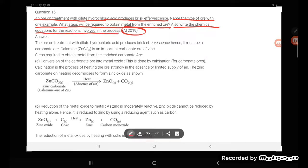The ore on treatment with dilute hydrochloric acid produces brisk effervescence, so it must be a carbonate ore. Calamine, which is zinc carbonate (ZnCO3), is an important carbonate ore of zinc.